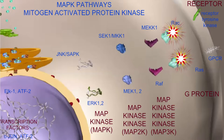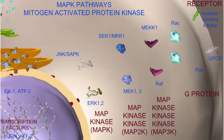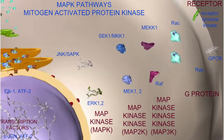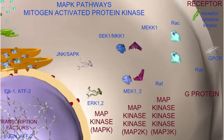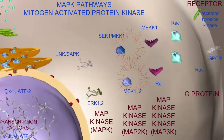In these cascades, serine-threonine kinases known as MAP kinase kinase kinase enzymes in turn activate other serine-threonine kinases known as MAP kinase kinase enzymes, which in turn activate the MAP kinase enzymes.